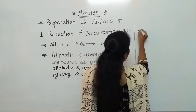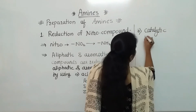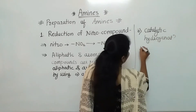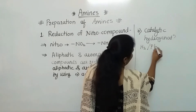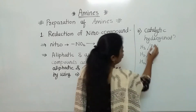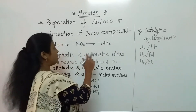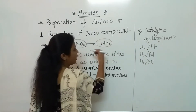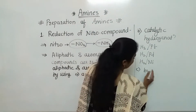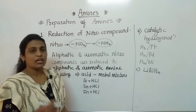Another method is catalytic hydrogenation. Here we can use H2 with platinum, H2 with palladium, or H2 with nickel. Any one of these six combinations can be used for the reduction of the nitro group into the amine group. The last option is by using lithium aluminium hydride — with that also we can prepare amines.